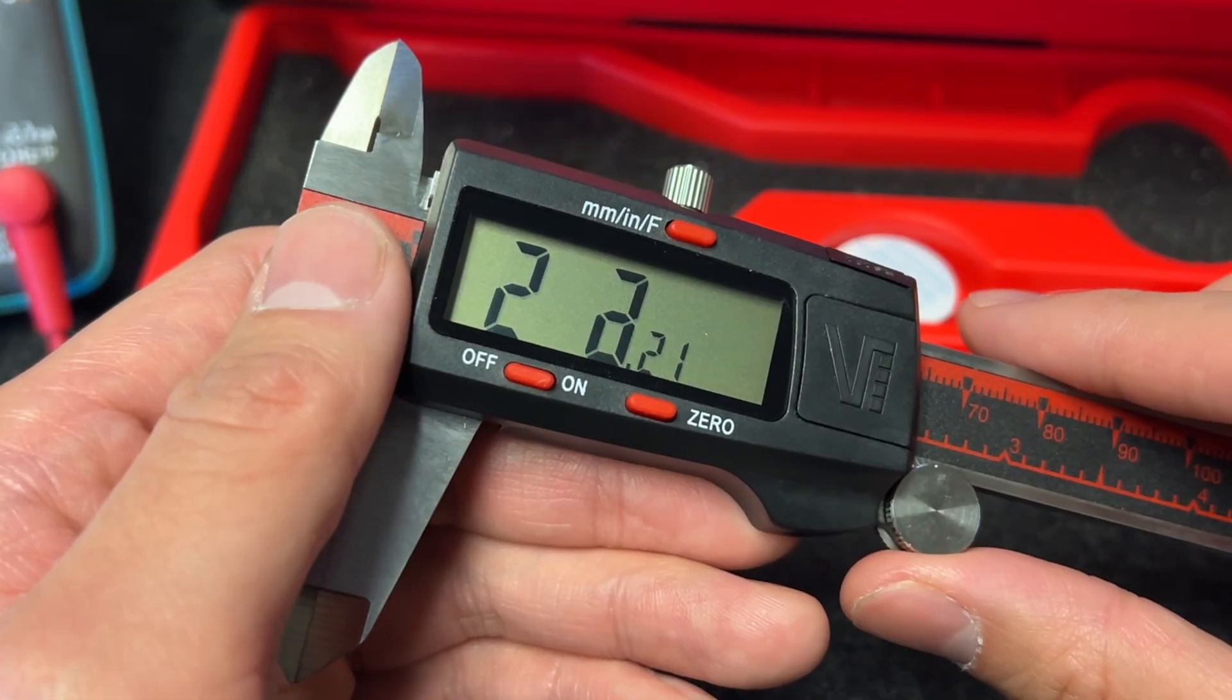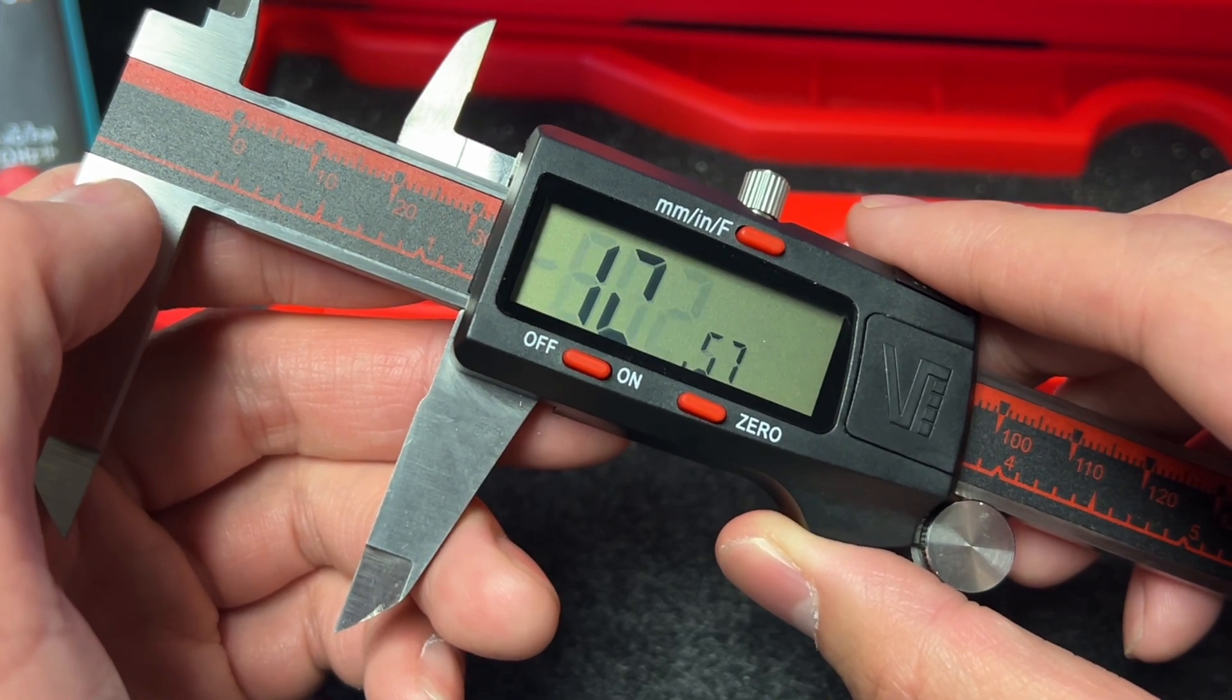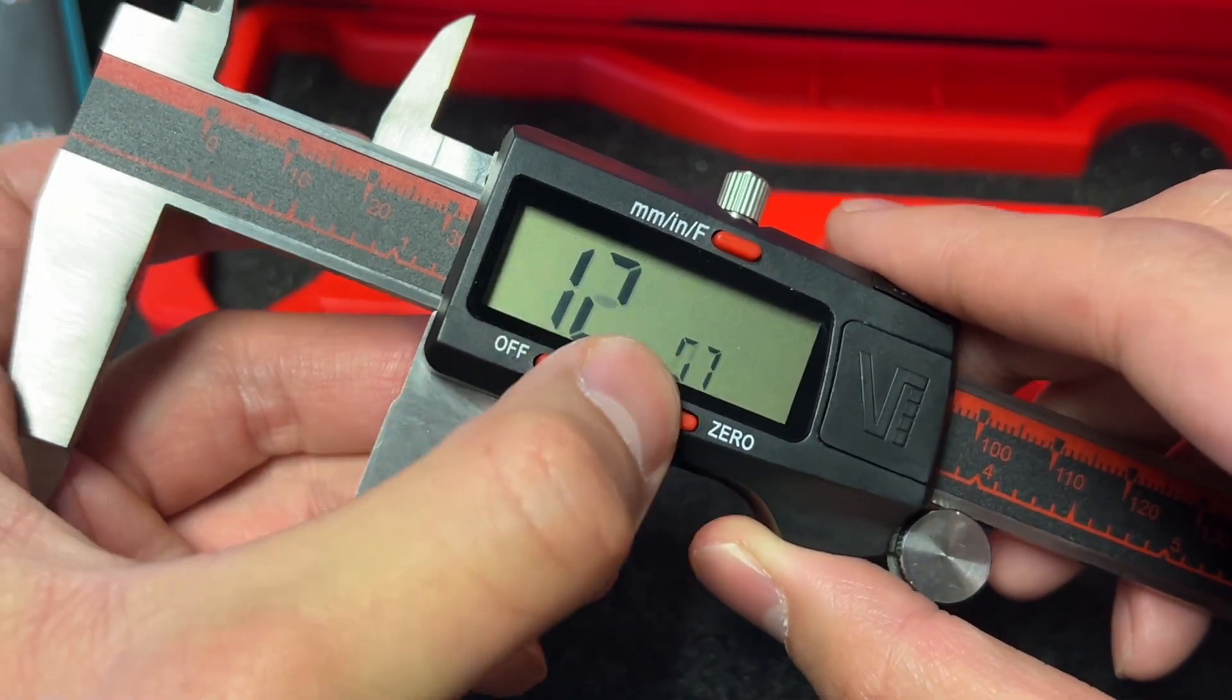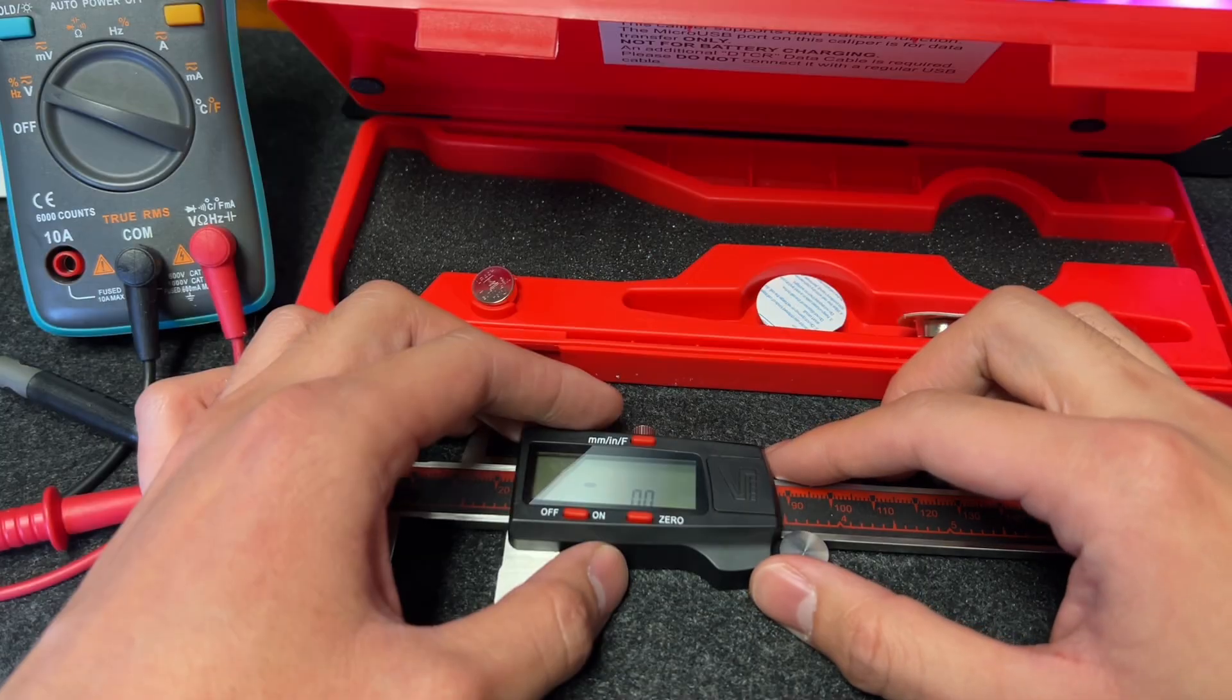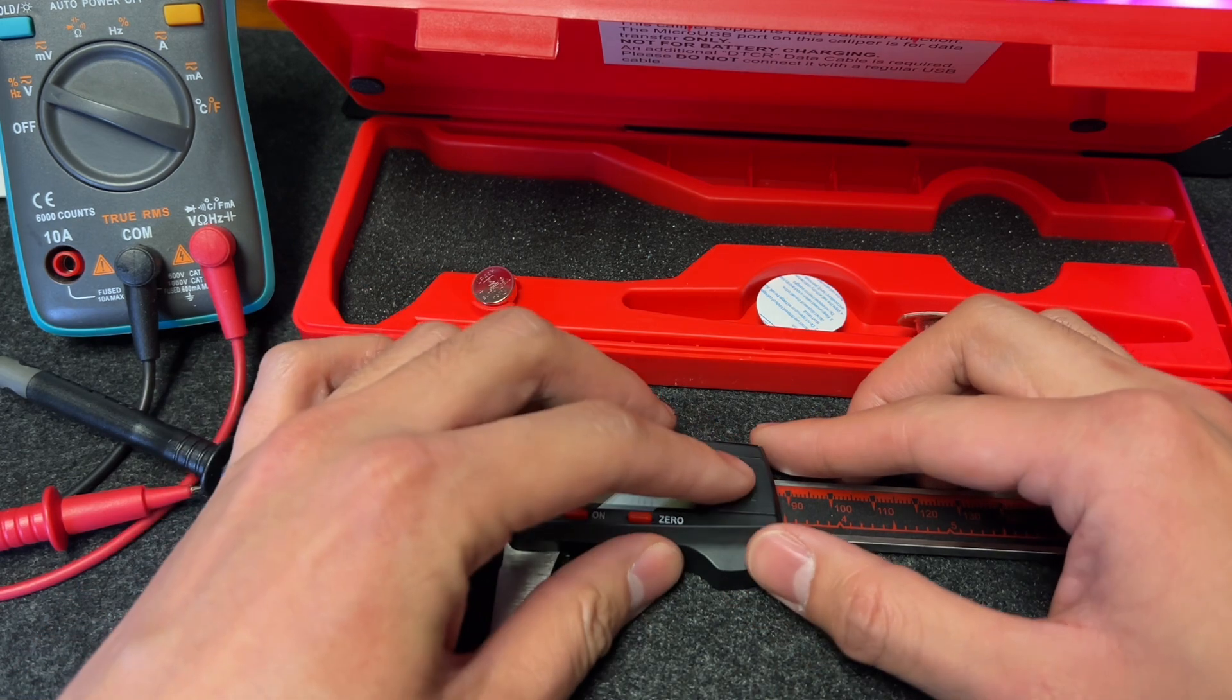As you can see, the display is malfunctioning. The number keeps jumping and blinking, and all buttons are not working. Usually this kind of issue is caused by a low battery, so let's check out the battery.